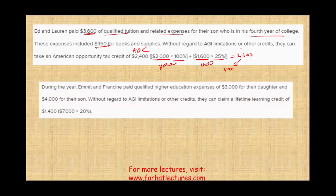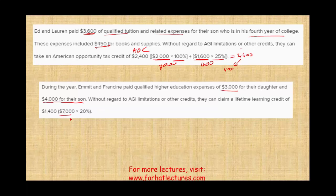Example: During the year, Emmett and Francine paid qualified higher education expenses of $3,000 for their daughter and $4,000 for their son. Without regard to AGI limitations or other limits, they can claim a Lifetime Learning Credit of $7,000 times 20% — that is, $3,000 plus $4,000 combined, then multiplied by 20%.